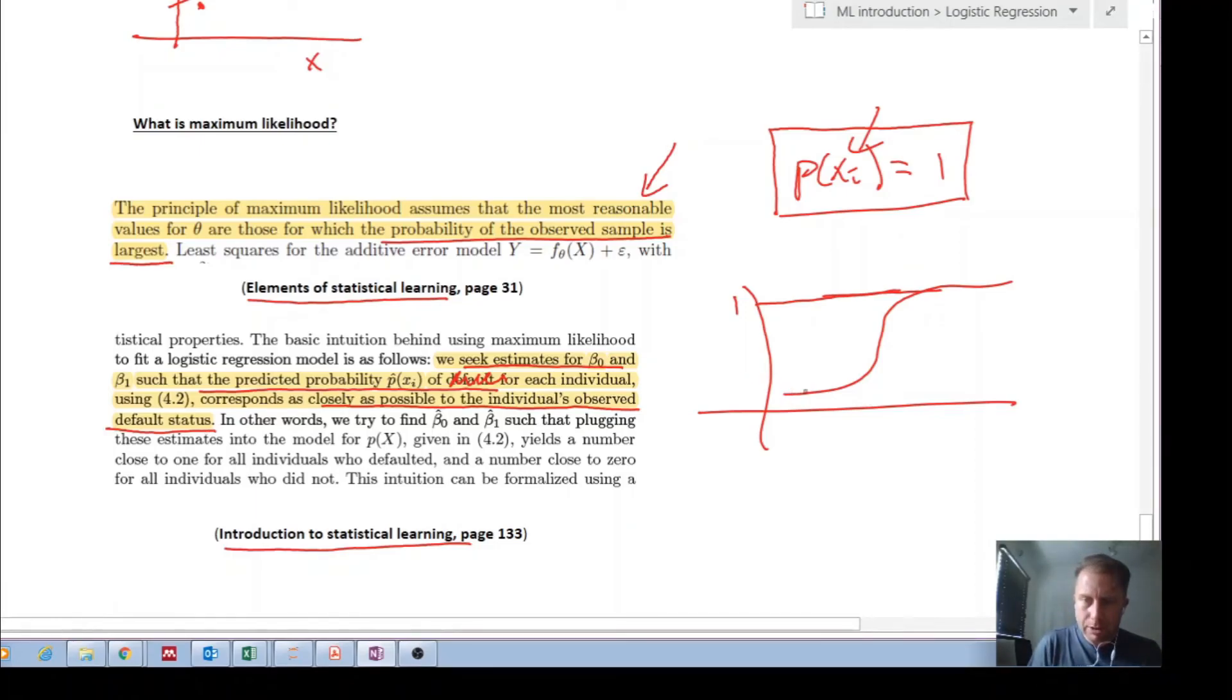So if you're zero here, or if you're one here, we're trying to find beta zero and beta one hat such that plugging these estimates into the model for probability of X, our sigmoid yields a number close to one for all individuals who are one and a number close to zero for all individuals who are zero according to your definition.